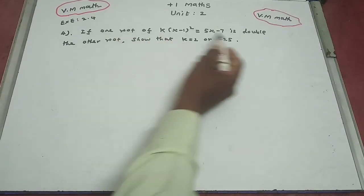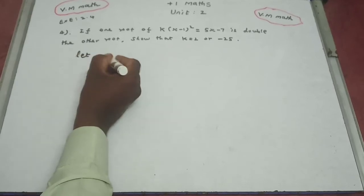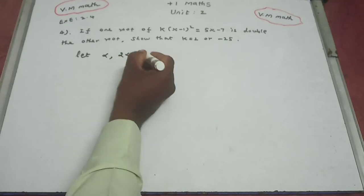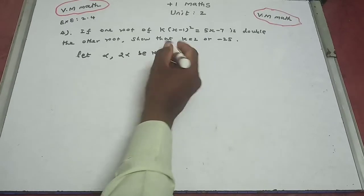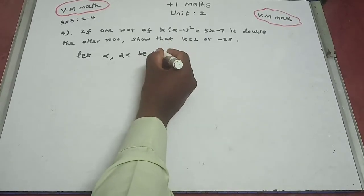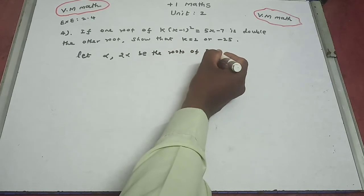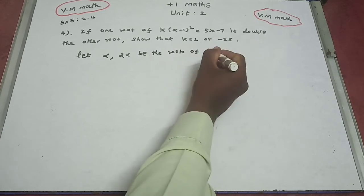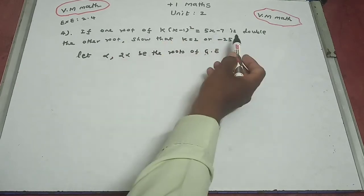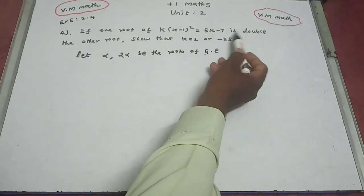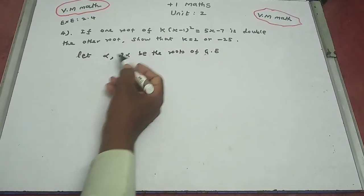One root is double the other root. Let alpha and 2 alpha be the roots of the given equation. So we name the roots alpha and 2 alpha. One root of the given equation is double the other root, so we take alpha and 2 alpha.